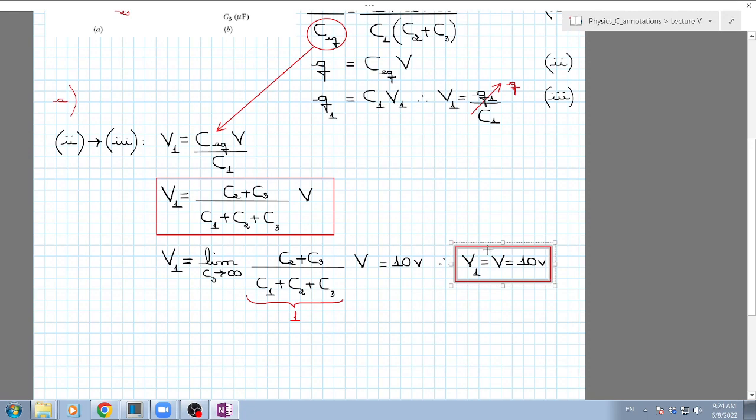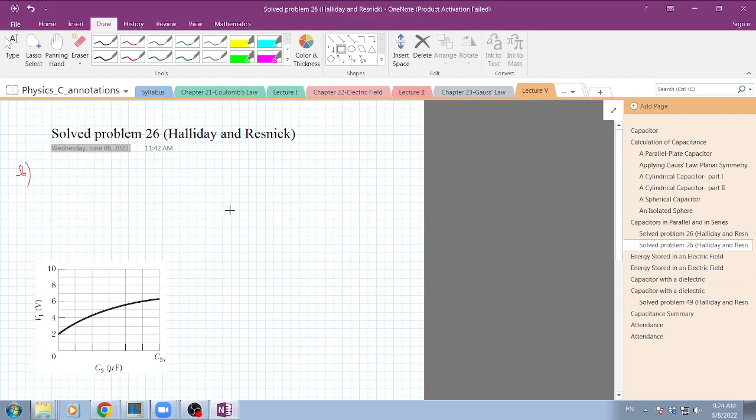Let's solve for item B. If you look at this graph, we have one point here: V1 for when C3 is equal to zero, and this is going to be 2 volts. In this case, if C3 is zero, that means the two capacitors are in series, which means they have the same charge.